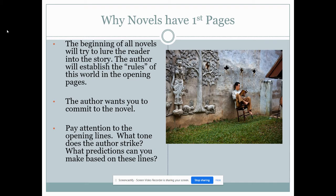Novels in the first pages — we just finished the very first parts of Dubliners. The beginnings of all novels will try to lure the reader into the story. The author needs to establish the rules of this world in those opening pages. In Dubliners, we learn that each story is going to contain an epiphany, each story is missing something — something that is unsaid — that's important to understanding Joyce's point. We learn that we are within the geographical setting of Dublin, but that we're going to be exposed to a whole range of humanity.